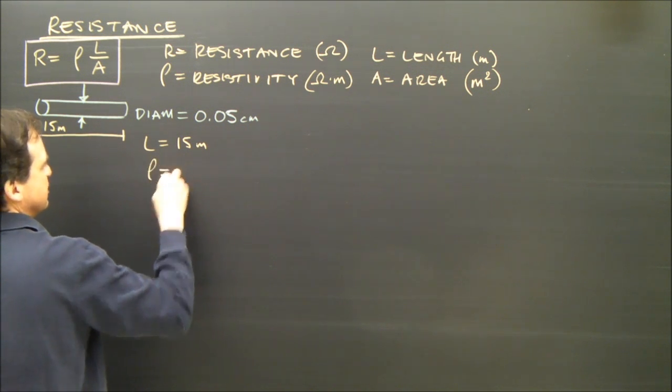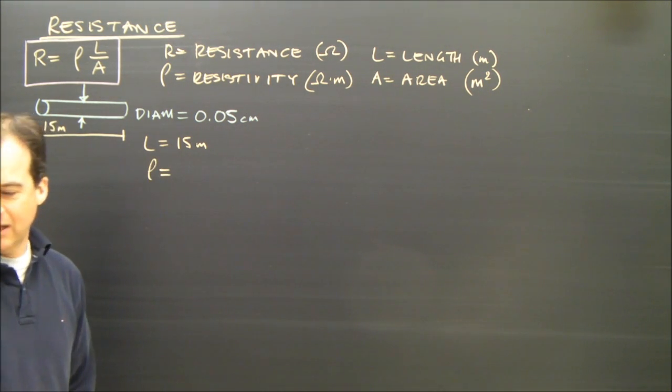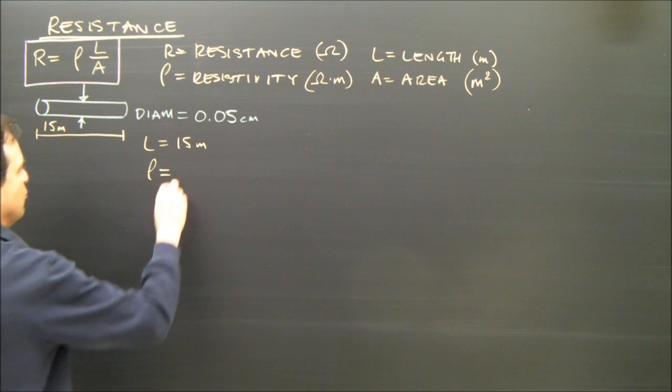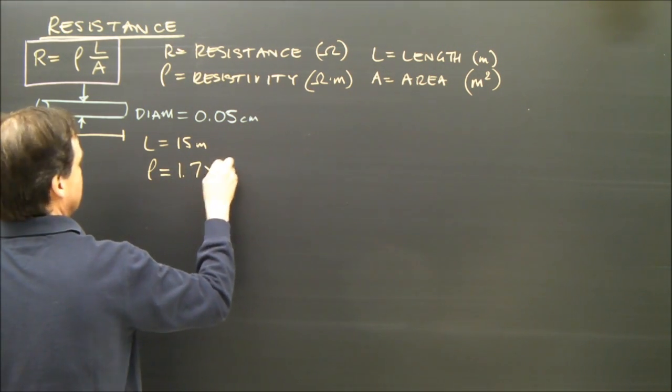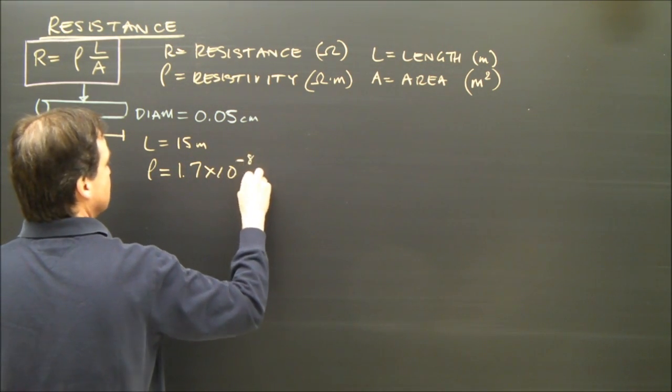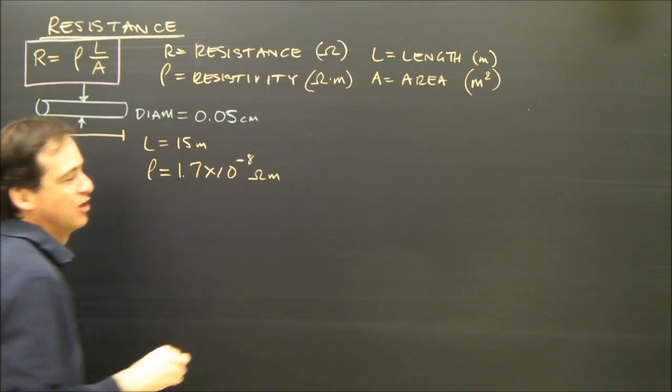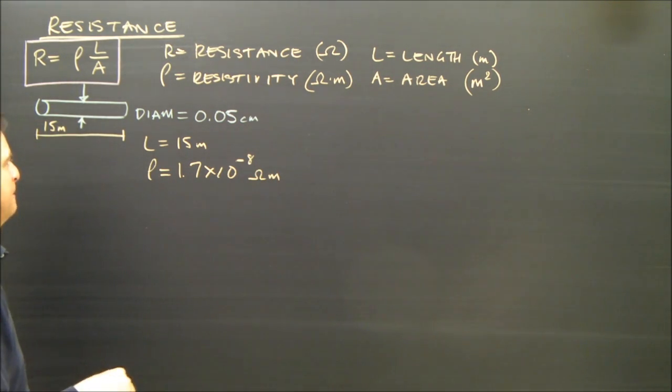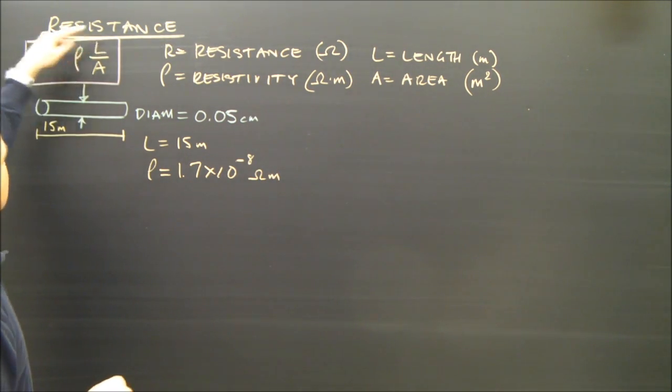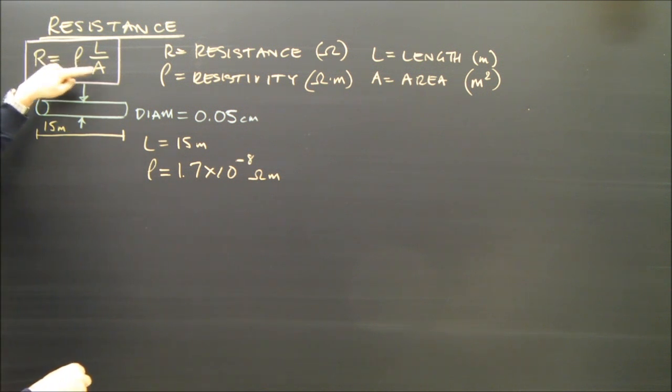I know the resistivity. I look it up in the book, and it is 1.7 times 10 to the negative 8 ohm meters. Not ohms per meter, ohm meters. So I have length. I've got resistivity. I need the area.